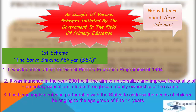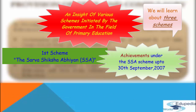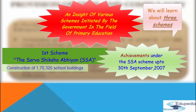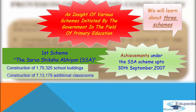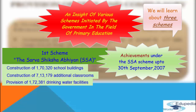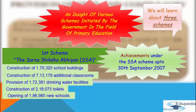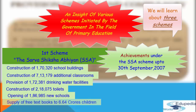The achievements under SSA up to September 30, 2007 include: construction of 1,70,320 school buildings; construction of 7,13,179 additional classrooms; provision of 1,72,381 drinking water facilities; construction of 2,18,075 toilets; opening of 1,86,985 new schools; supply of free textbooks to 6.64 crore children; and appointment of 8.10 lakh teachers.